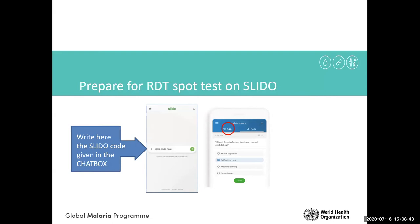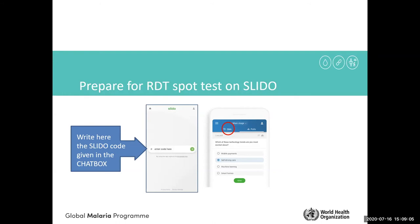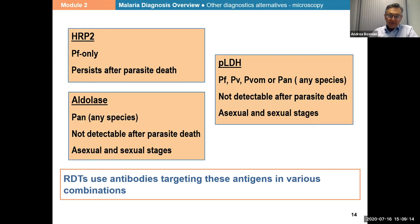A question from Dr. Mohamed: can a test still be positive after giving ACT treatment? If the test is using HRP2, because the antigen may stay in the blood for even four or five weeks, the test may be positive even if the parasite is completely cleared — the parasite is dead and removed from circulation — but the HRP2 test may still be positive.